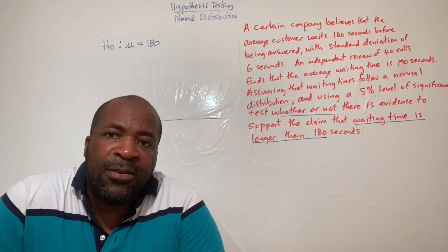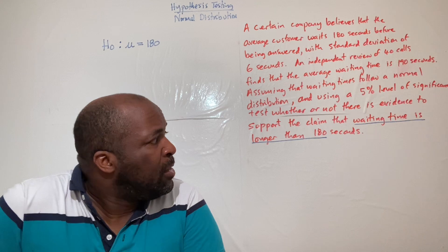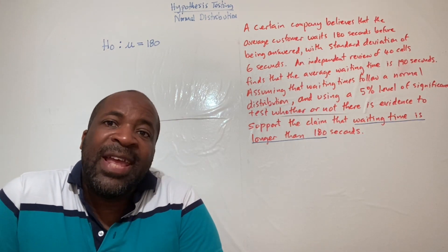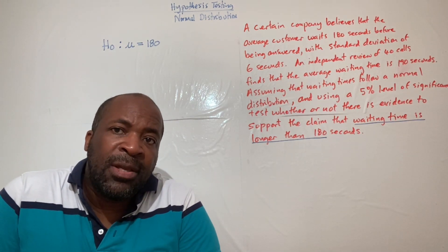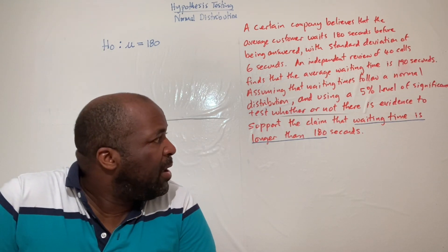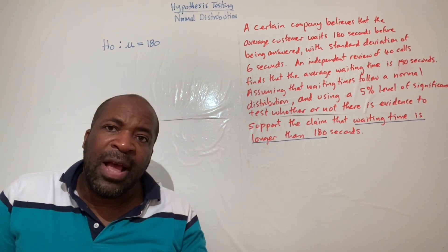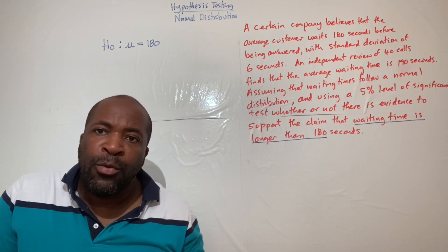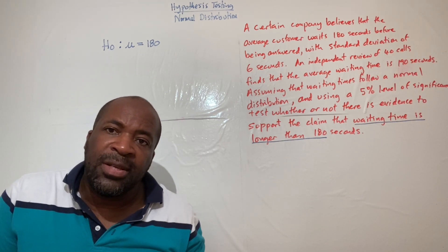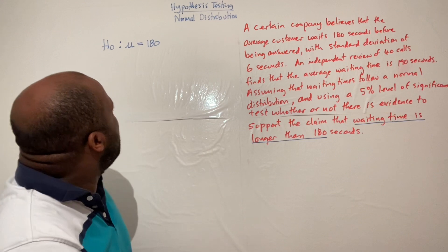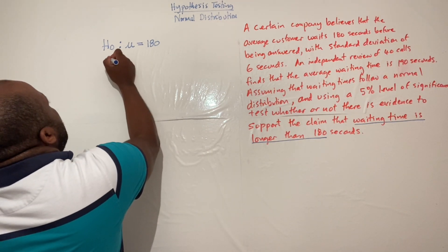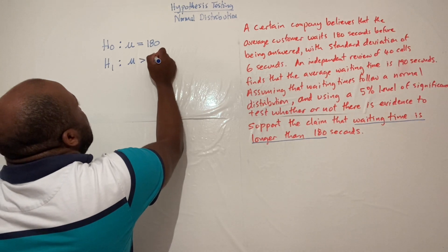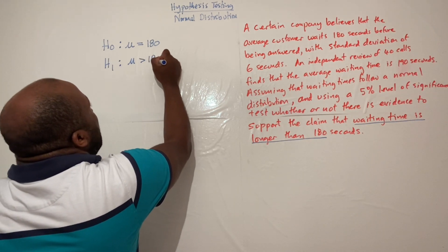The question asks us to test whether there's evidence to support the claim that the waiting time is longer than 180 seconds, at the five percent level of significance. 'Longer' is explicit here — we're testing for an increase. Therefore, our alternative hypothesis is that μ is greater than 180.